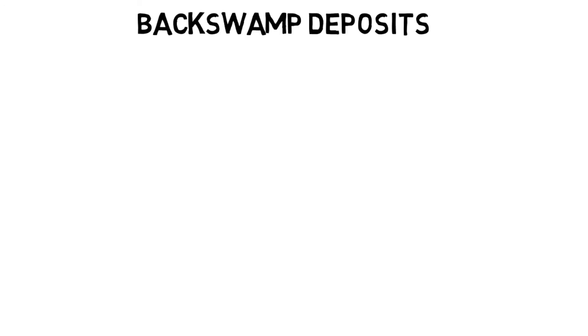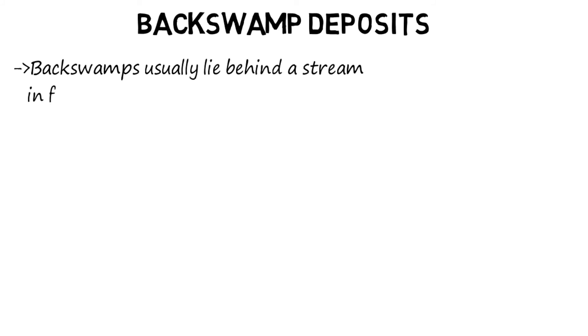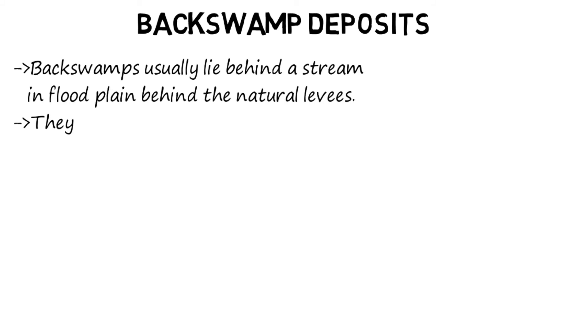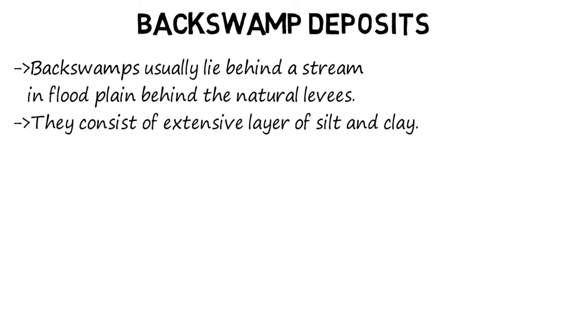Back swamp deposits. Back swamps usually lie behind a stream's floodplain behind the natural levees. They consist of an extensive layer of silt and clay.